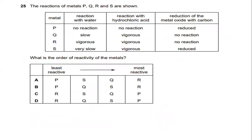The reactions of P, Q, R and S are shown. What is the order of reactivity of the metals? Looking at the reactions with water: P shows no reaction, then very slow which is S, then slow which is Q, and then vigorous which is R. So the order is P, S, Q, R. The answer should be A.